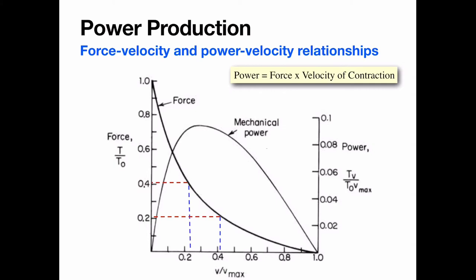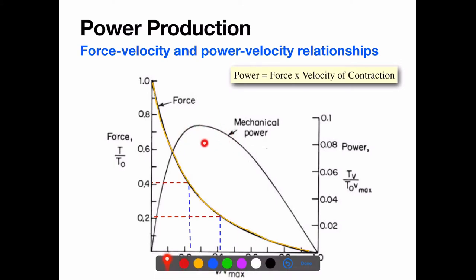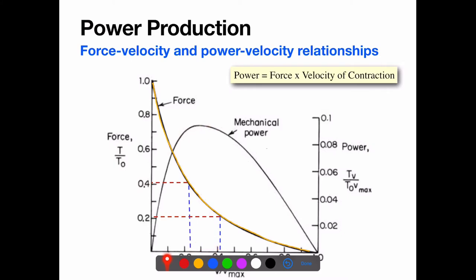Power comes from the force-velocity curve. This is a graph of relative force on the y-axis and relative velocity, v over v-max, on the x-axis. You get peak power at intermediate velocity and intermediate force. That's because when force is really high, velocity is near zero, so power is near zero. When velocity is really high, force is near zero, so power is again near zero. Power peaks in the intermediate range.